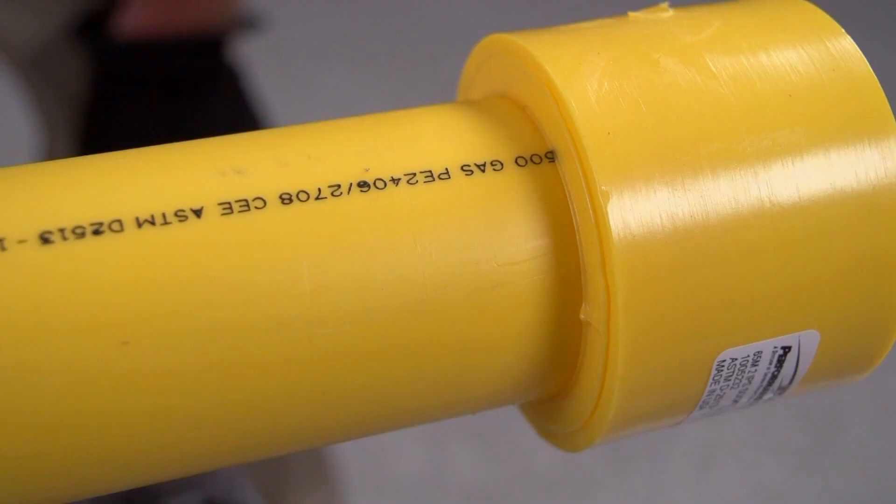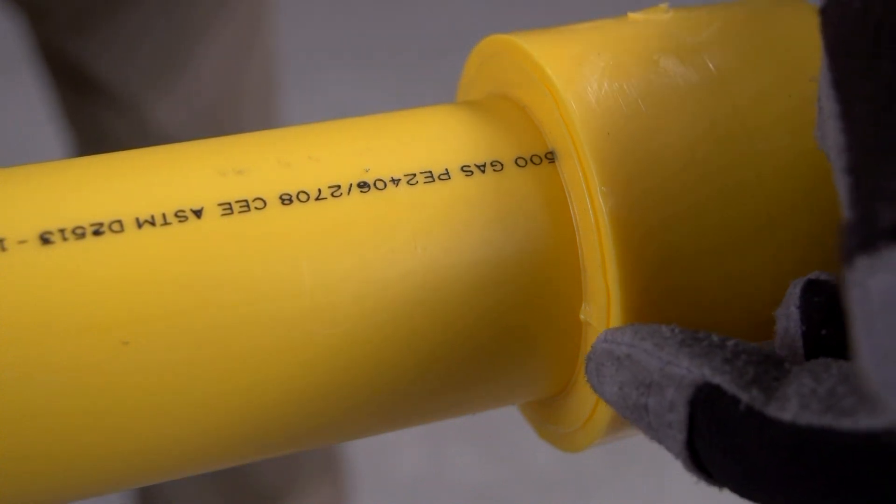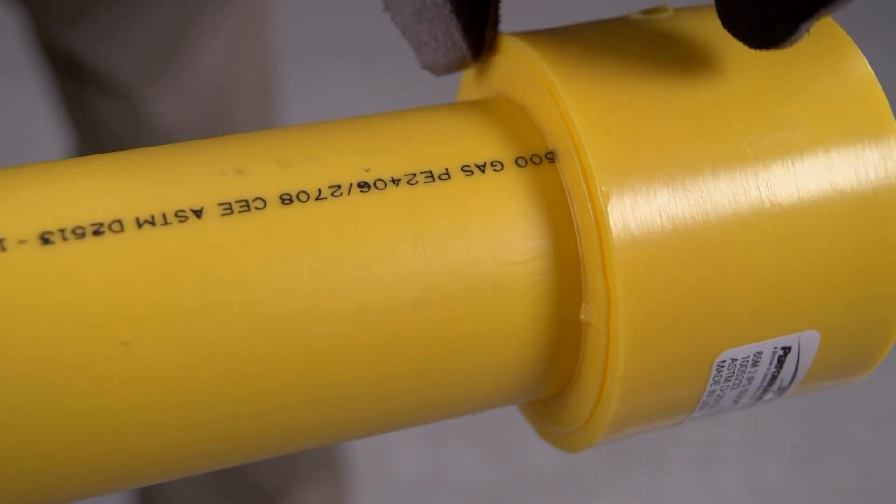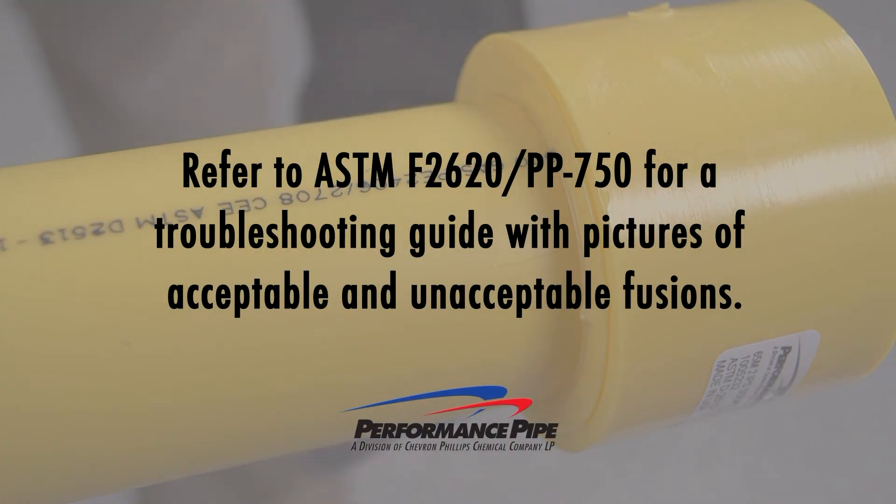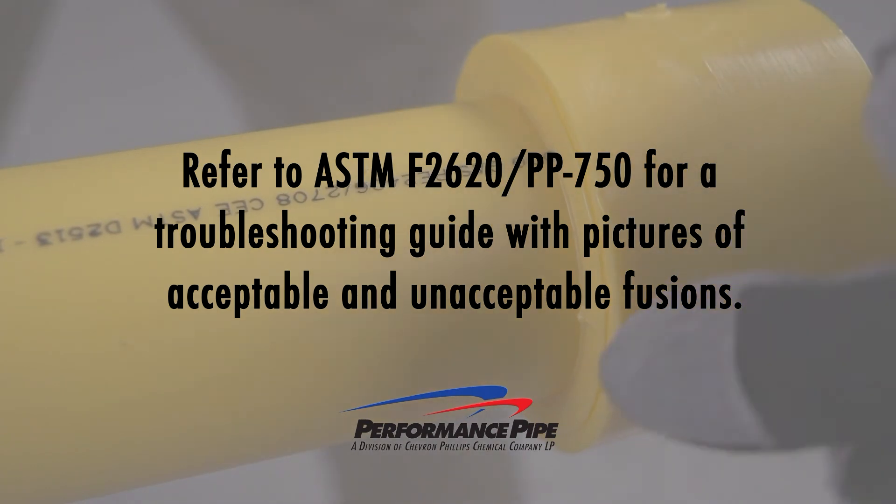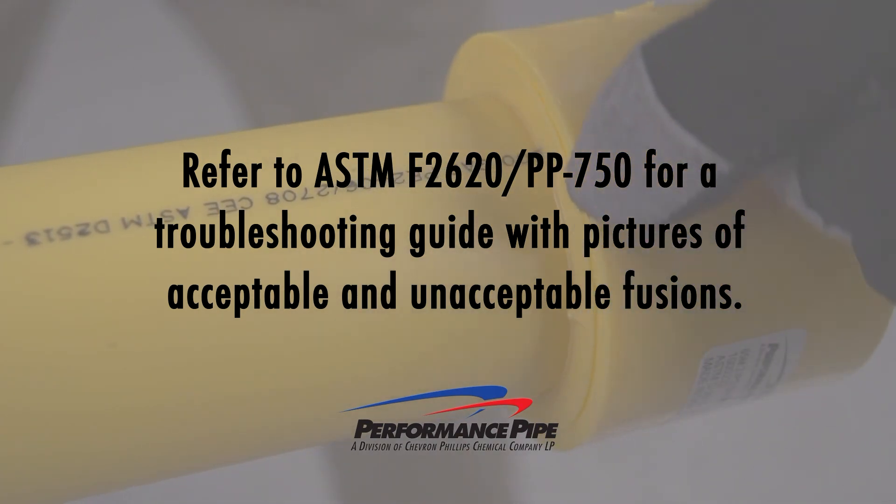Inspect the end of the socket fitting at the pipe. There should be a clear impression of the cold ring clamp onto the melted surface at the end of the fitting with no visible gaps or voids around the pipe and socket melt bead. The pipe and fitting should be aligned straight with each other. Refer to ASTM F2620 or Performance Pipe Bulletin 750 for a troubleshooting guide with pictures of acceptable and unacceptable fusions.